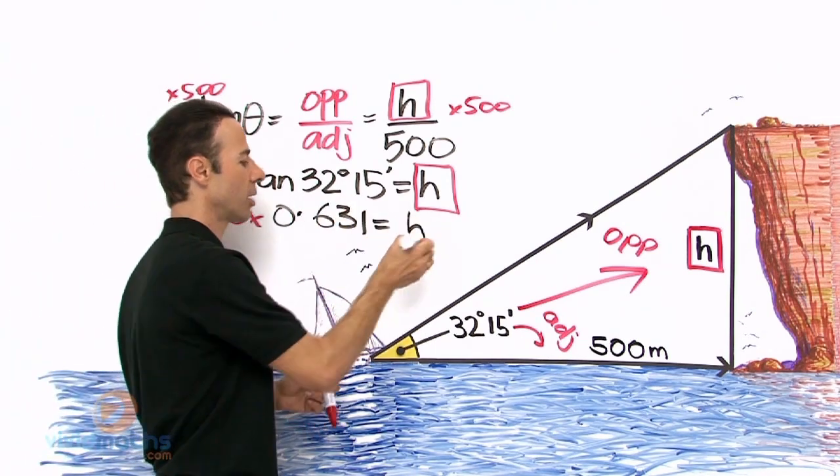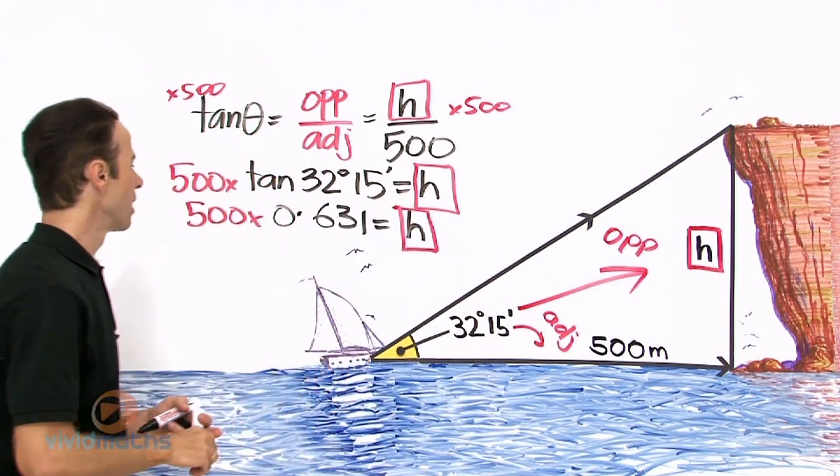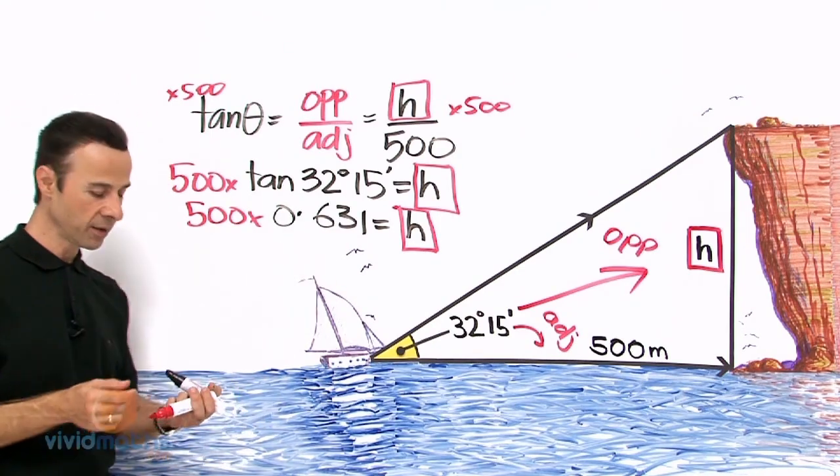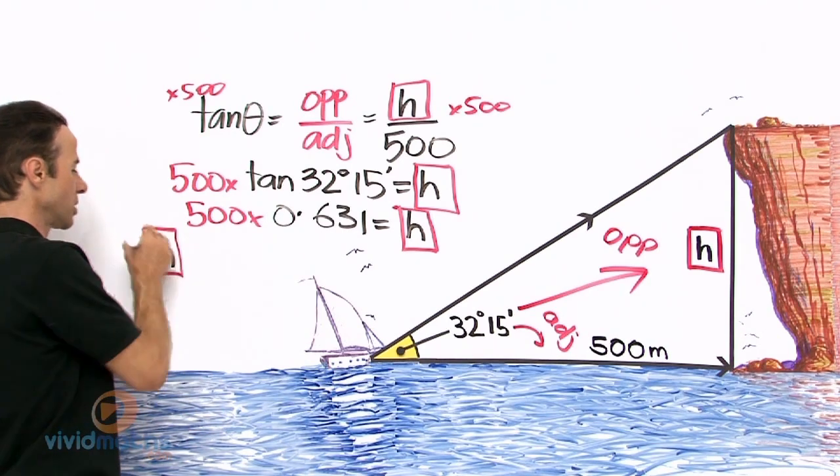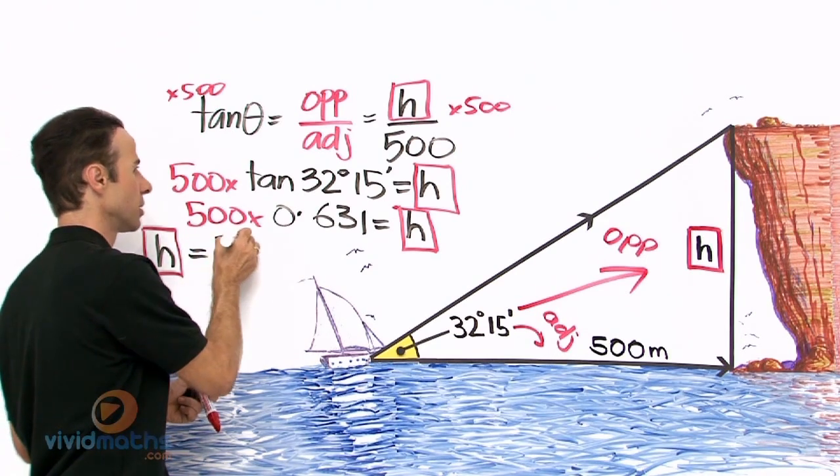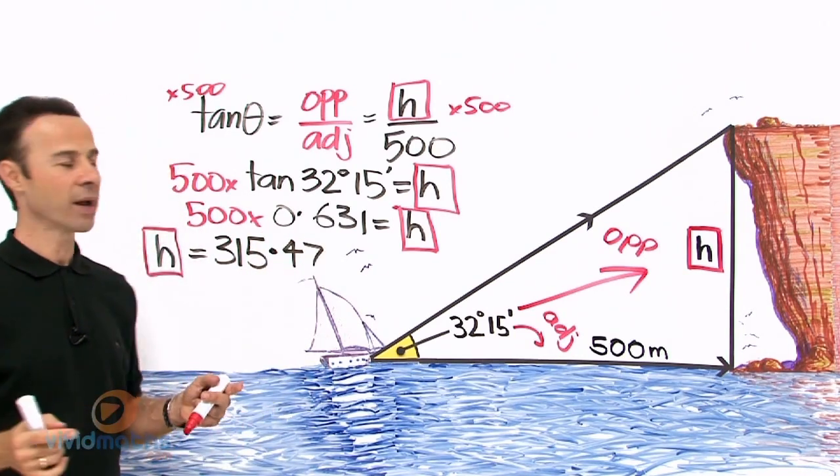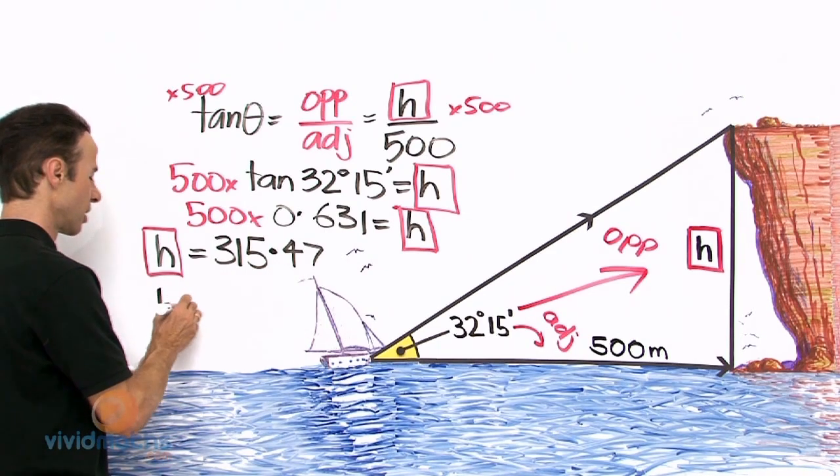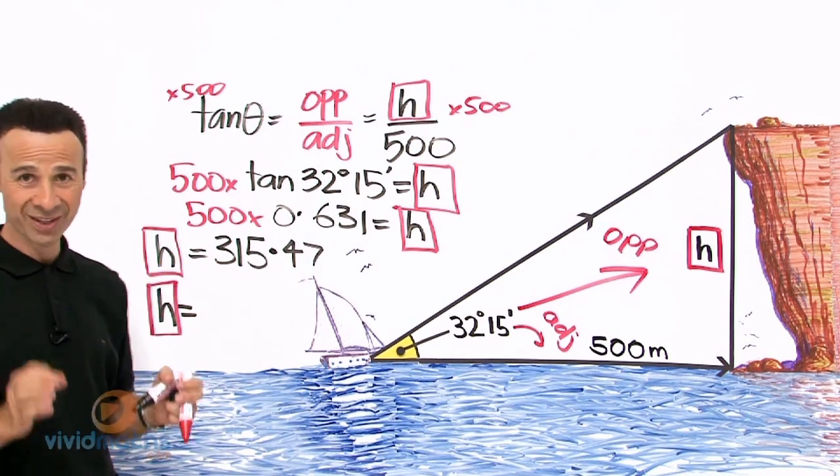And that is going to equal, of course, our height, which is what we are looking for: height of the cliff. So let us just put that in the calculator. 500 times 0.631 for the height of that cliff yields h equals, put it in, 315.47. That is what the calculator says. We can round it off. Now the 4 is lower, so that means we can go to the final answer of h equals 315 meters. And this is the height of the hill to the nearest meter.